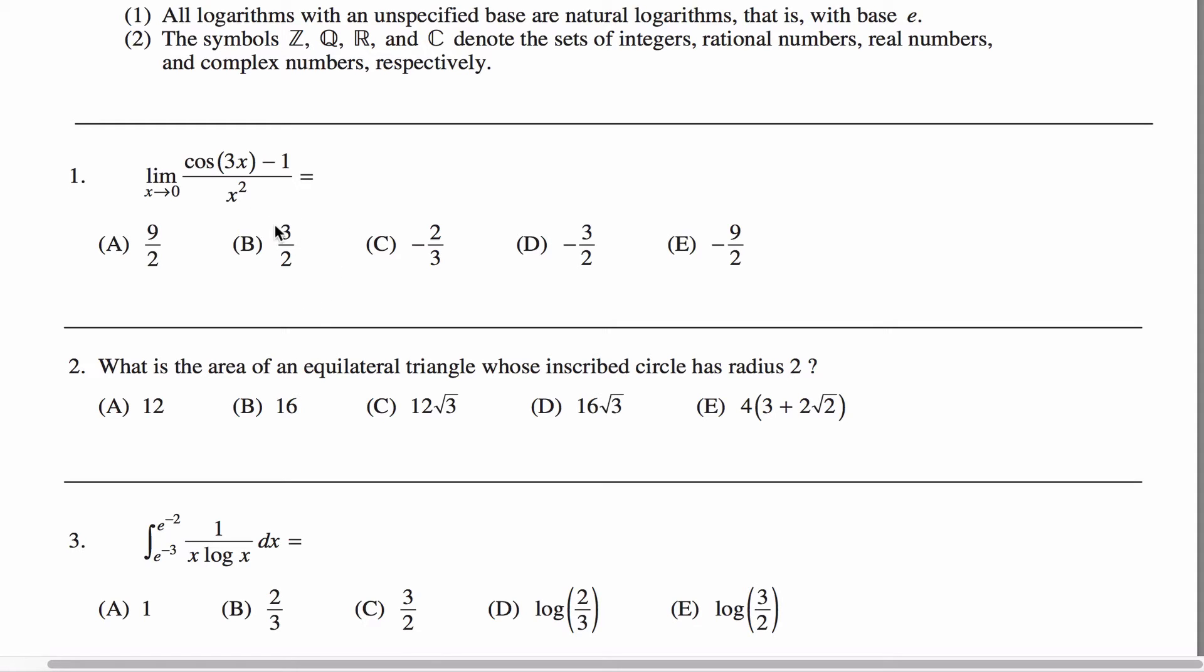More often than not, the indeterminate forms you'll see are zero over zero and infinity over infinity, although there are others. So when you're in an indeterminate form, you can use L'Hopital's rule, which allows you to say that that limit is the same as the limit of the quotient of the derivatives.